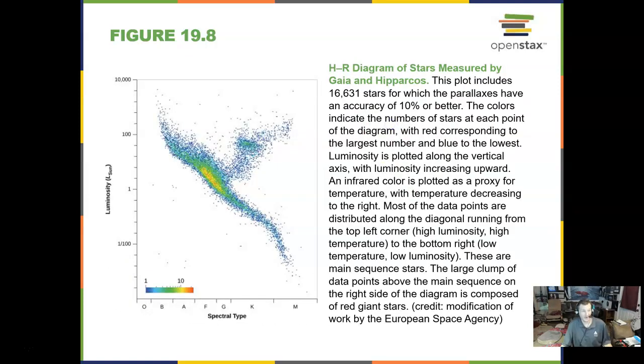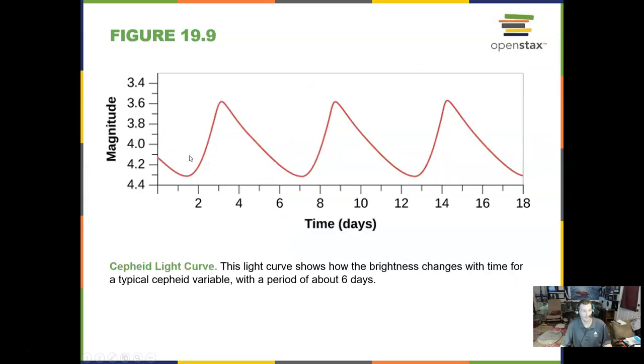The HR diagram, Hertzsprung-Russell diagram, is very, very important. And here is a plot on the HR diagram of stars measured by two space satellites. And they got a very good HR diagram from this. That big band in the middle is called the main sequence where the Sun is. Normal stars.